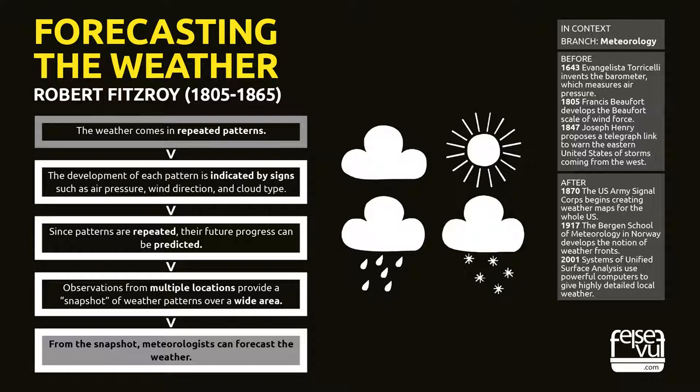A century and a half ago, notions of weather prediction were deemed little more than folklore. The man who changed that and gave us modern weather forecasting was British naval officer and scientist Captain Robert Fitzroy. Fitzroy is better known today as the captain of the Beagle, the ship that carried Charles Darwin on the voyage that led to his theory of evolution by natural selection.